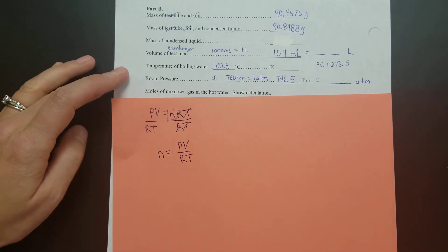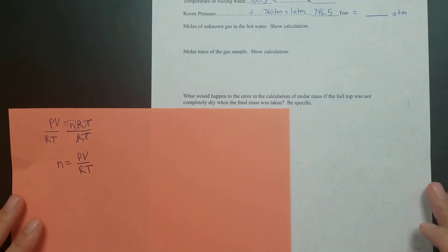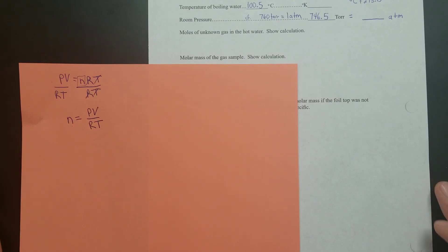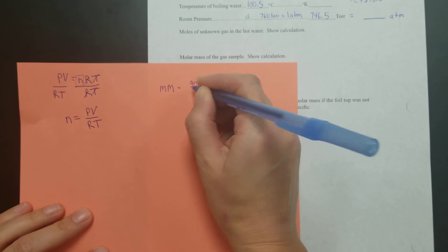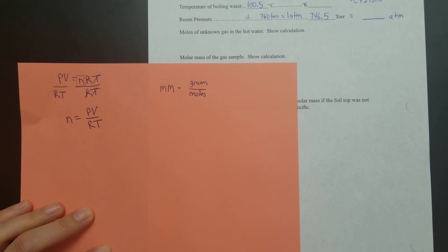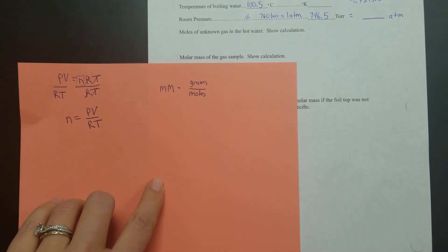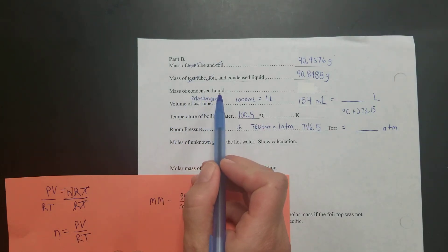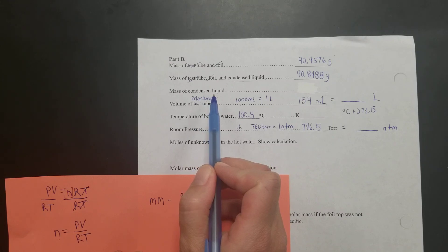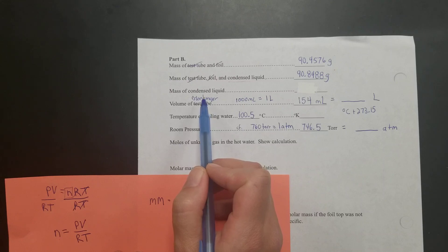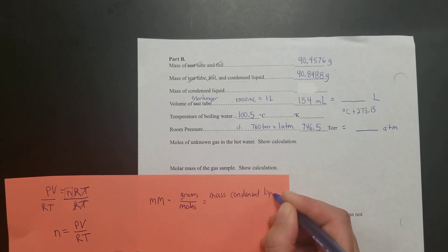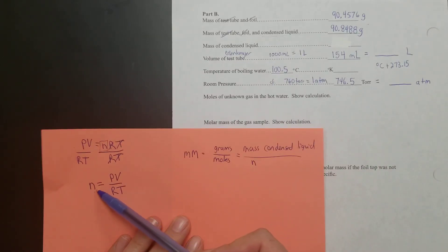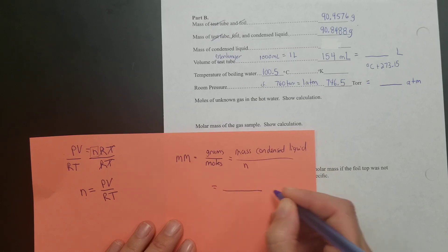Once you have the number of moles, the next question asks for the molar mass of the gas sample. Molar mass equals grams divided by moles. We know this because those are the units used when calculating molar mass from the periodic table. The grams to use is the mass of the condensed liquid, since that was the gas that condensed back down and filled the Erlenmeyer flask. Divide the mass of the condensed liquid by the moles calculated from the ideal gas law to get the molar mass in grams per mole.